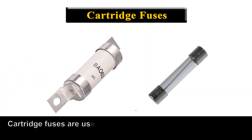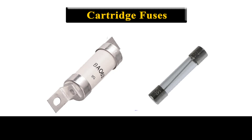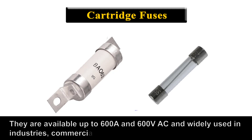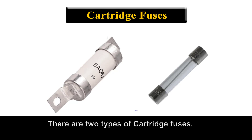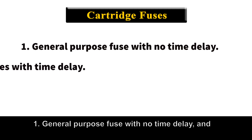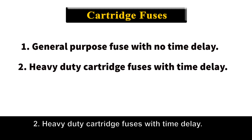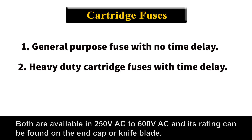Cartridge fuses are used to protect electrical appliances such as motors, air conditioners, refrigerators, pumps, etc., via high voltage ratings and currents. They are available up to 600A and 600V AC and are widely used in industries, commercial, as well as home distribution panels. There are two types of cartridge fuses: general purpose fuses with no time delay, and heavy duty cartridge fuses with time delay. Both are available from 250V AC to 600V AC and their ratings can be found on the end cap or knife plate.